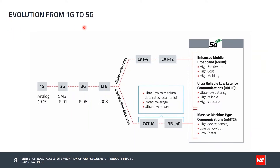Now we will see the evolution from 1G to 5G. 1G started in 1973 as analog communication, mainly for voice. Then 2G was introduced with SMS — short message service — so 2G supported both voice and SMS. The evolution continued with GPRS and EGPRS, considered as 2.5G, which added data support at minimum data rates. To enhance data rates further, 3G (also known as UMTS) was deployed in 1998.